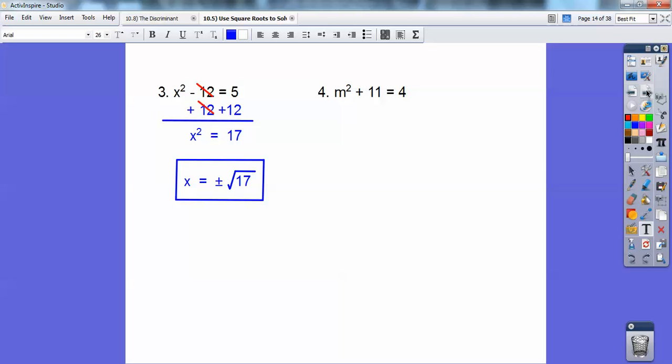So m squared plus 11 equals 4. I'm going to subtract 11 on both sides and get negative 7. Now, right here, I have a something squared equals negative 7. When I square a number, it's always going to be positive, except for 0. 0 squared is 0, but any other number squared is going to be positive. So when I see a squared being a negative number, that means no solution. I can never get a square to equal a negative number.